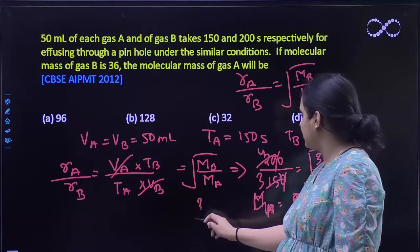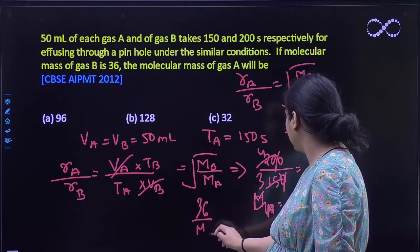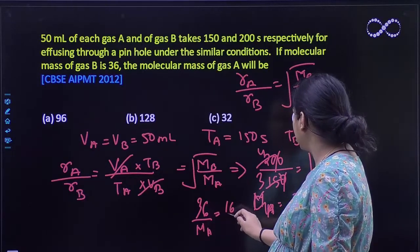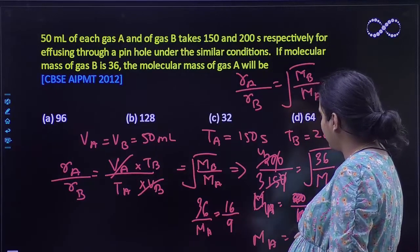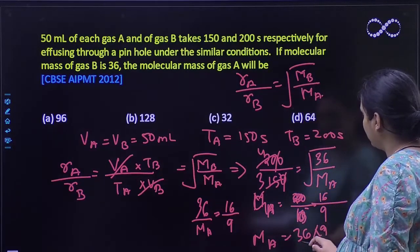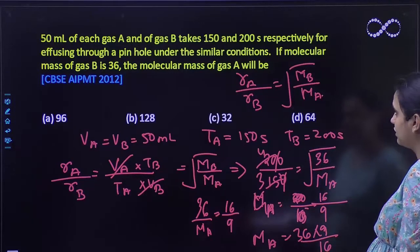36 by MA equals 16 by 9. So MA will be equal to 36 times 9 divided by 16.